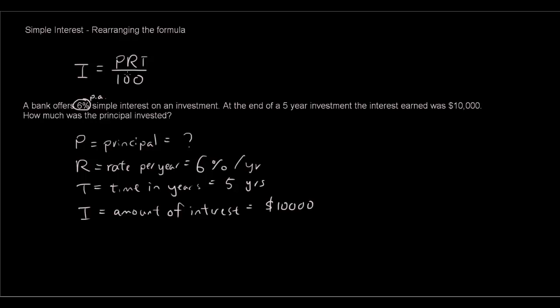So notice how for our equation I equals PRT over 100, I is the subject of the equation, which is not going to help us because I is not what we're trying to find. We're trying to find P. So what we need to do is rearrange this equation to make P the subject.